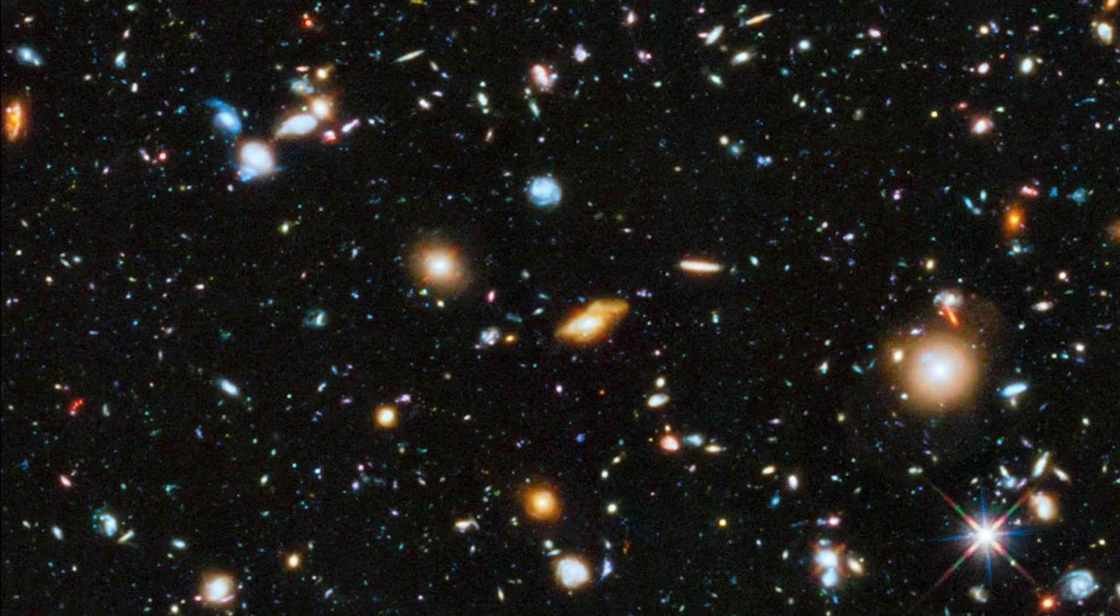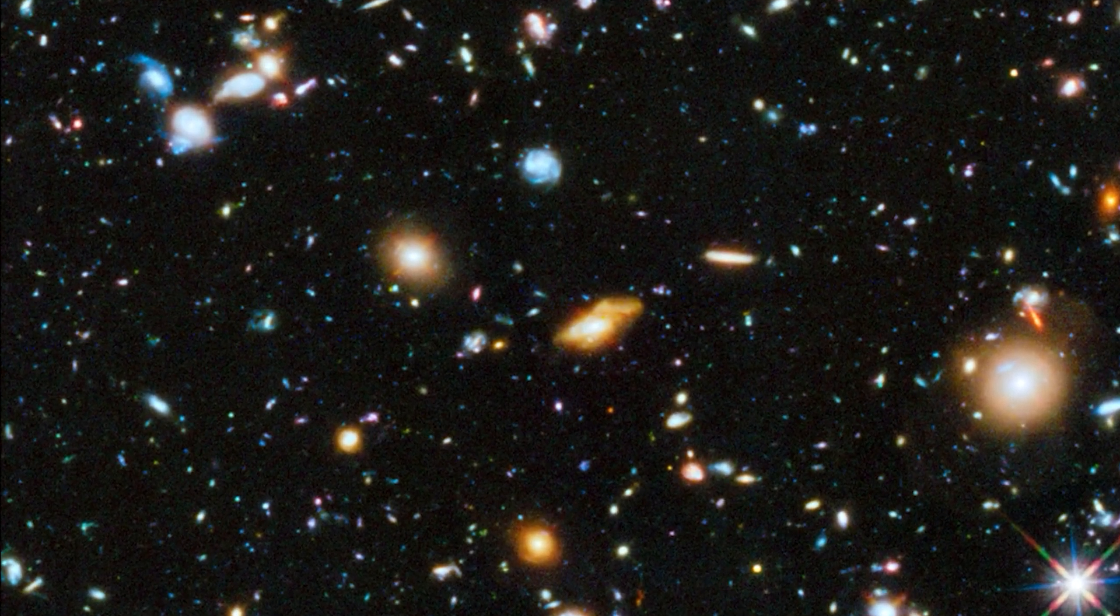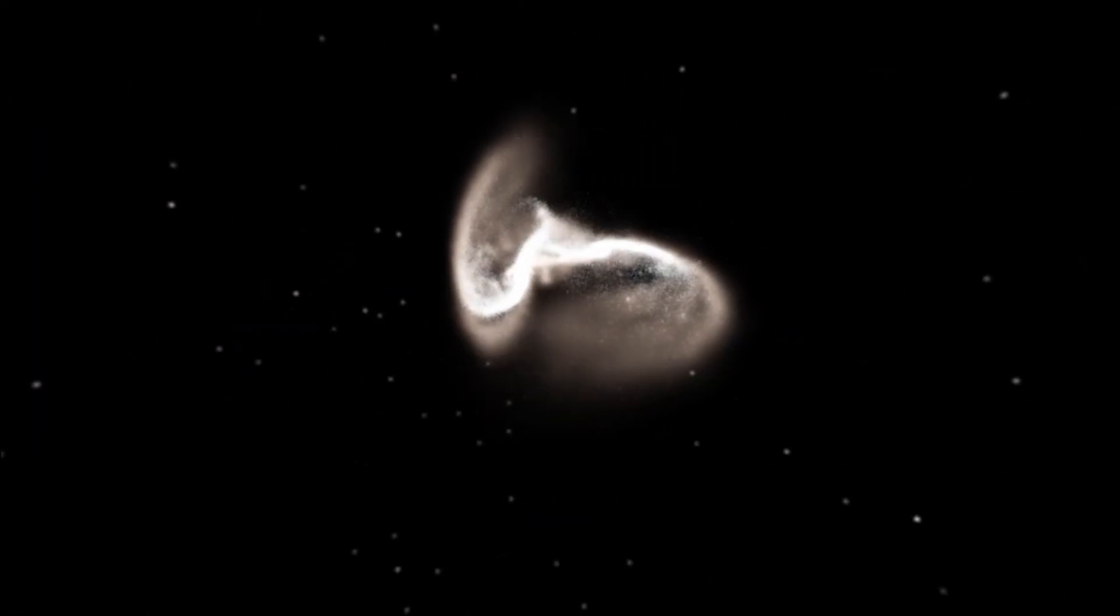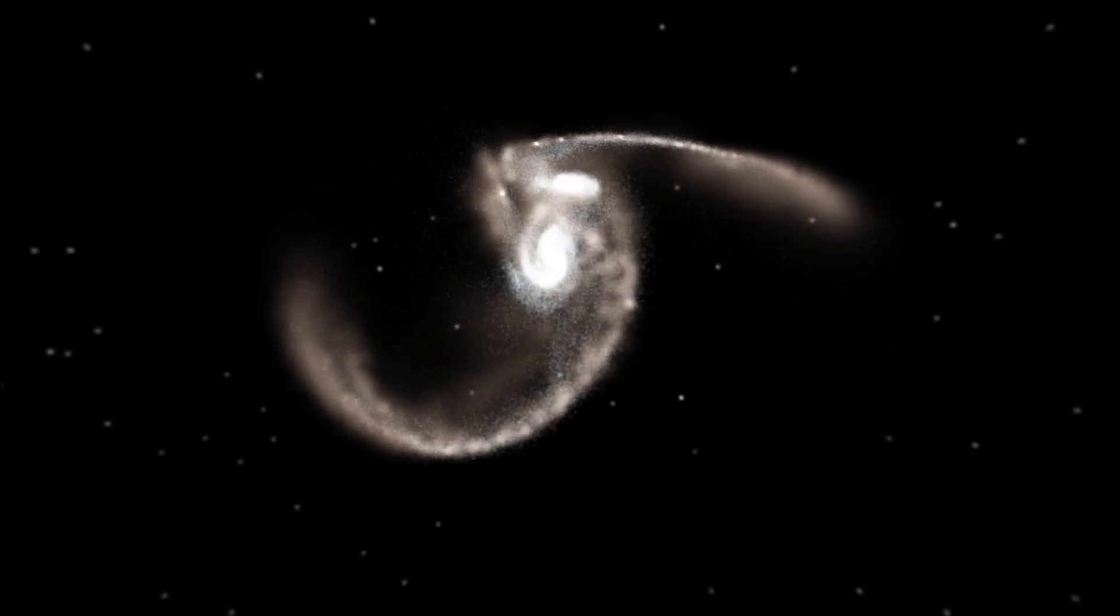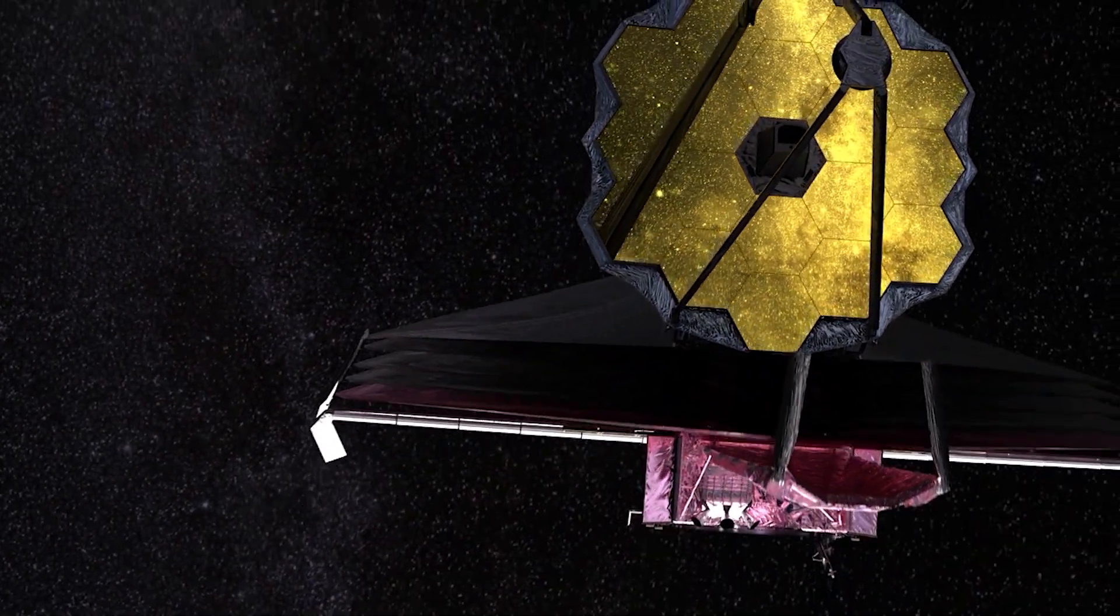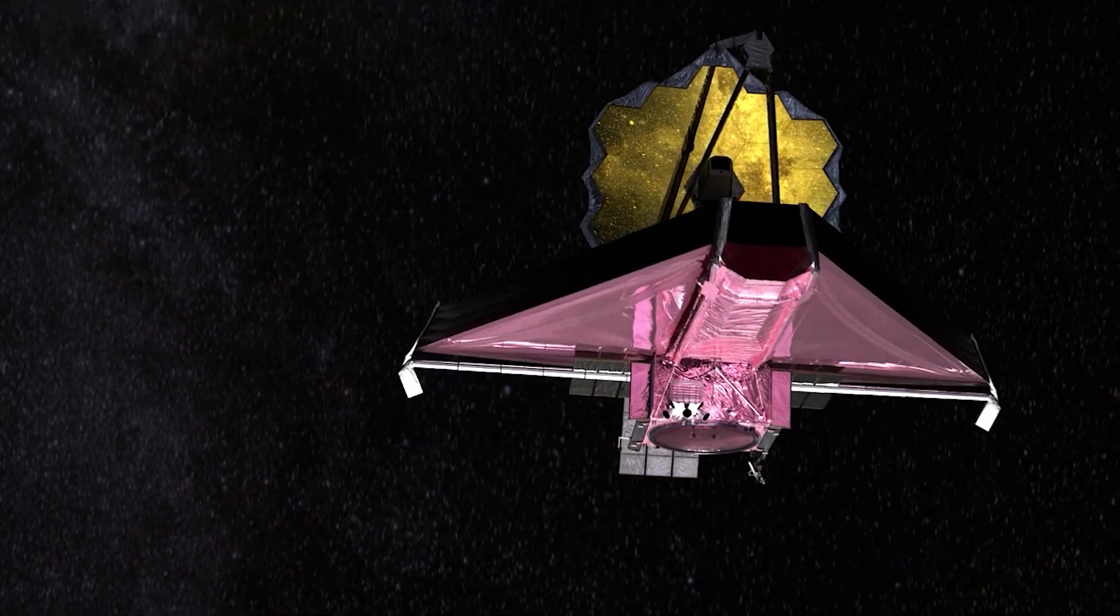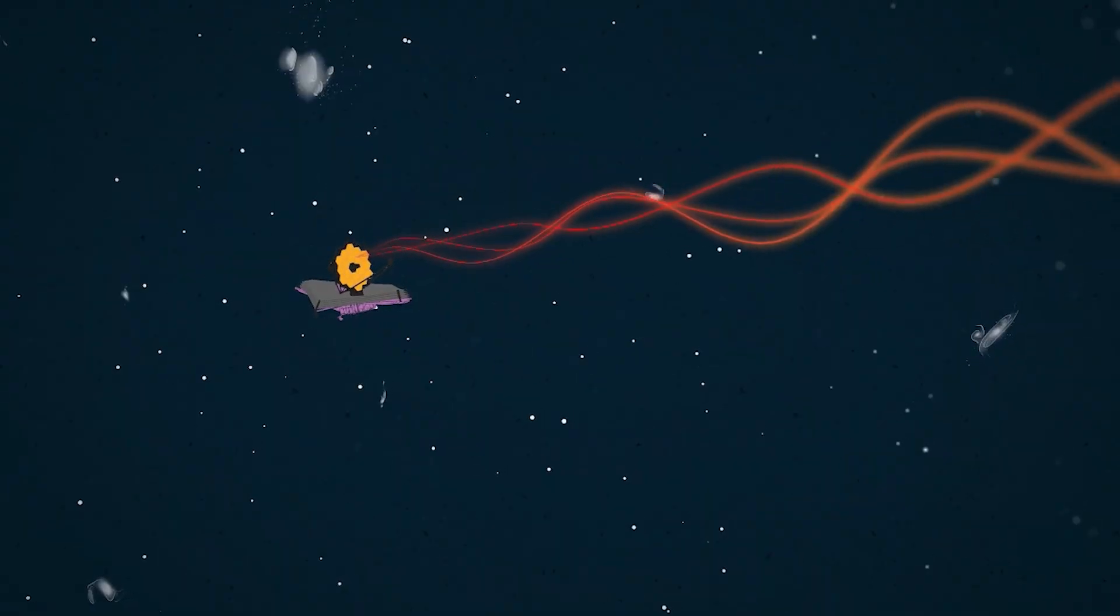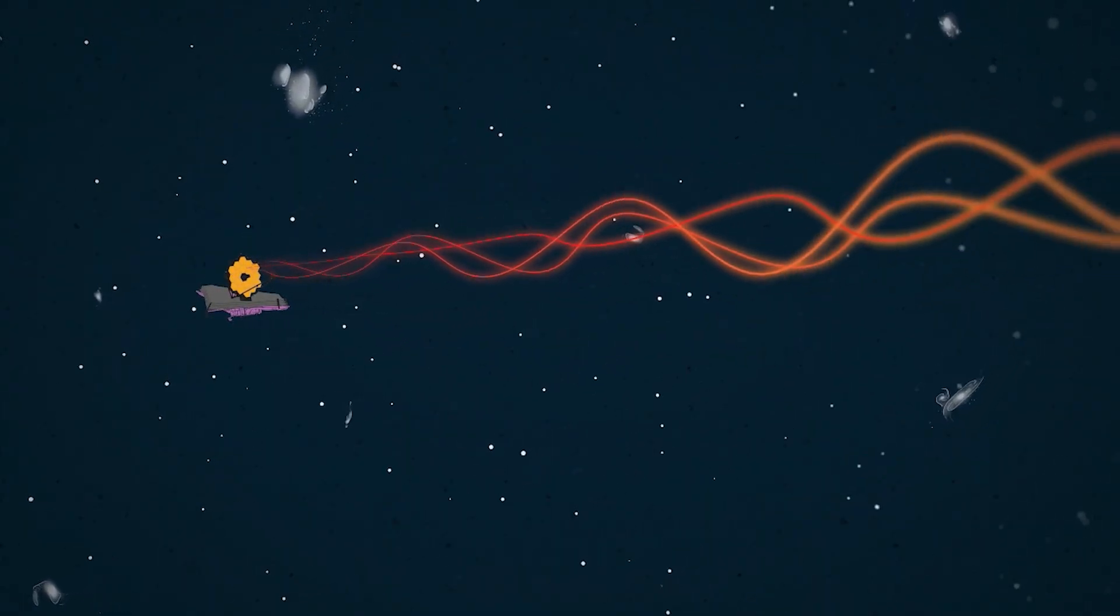The James Webb studies galaxy formation by observing a protocluster of seven galaxies that existed when the universe was young. These galaxies move at very high speeds within a halo of dark matter, which acts as gravitational glue that holds them together.